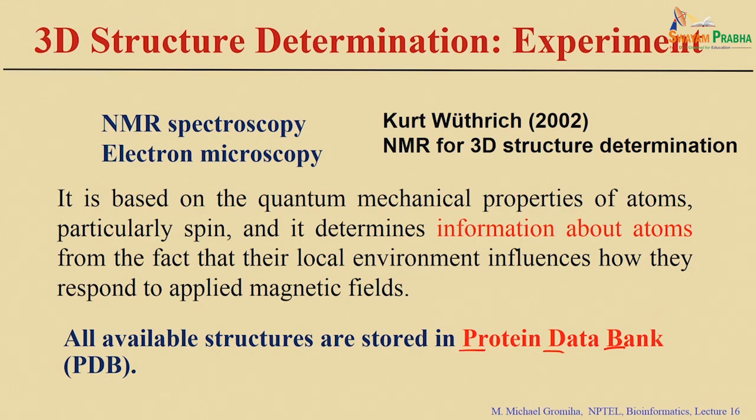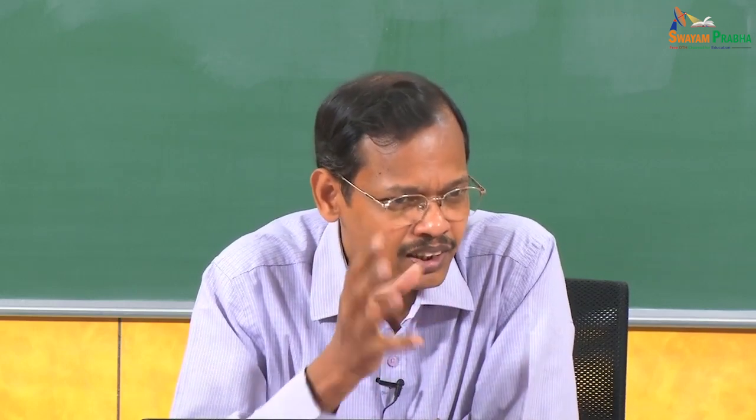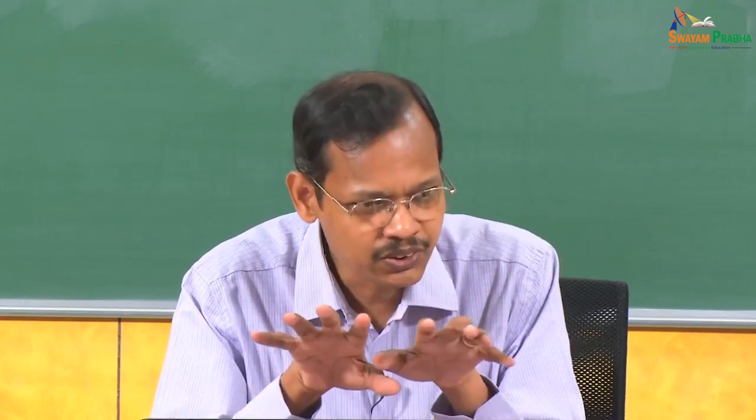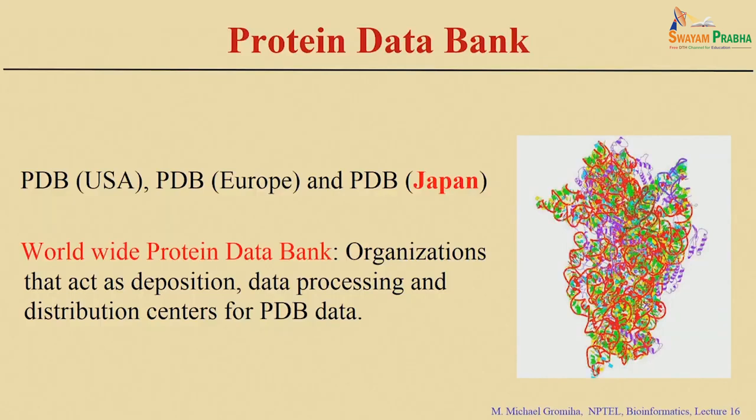In 1977, Brookhaven National Laboratory started collecting the structures of proteins. At that time there were only about 15–18 structures. They started developing a dataset, and later, as more structures became available, they formed the Research Collaboratory for Structural Bioinformatics, which became the Protein Data Bank.